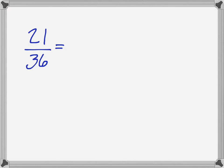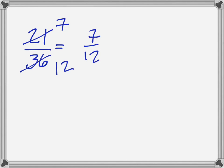Let's use the identity property to simplify fractions. Your book may also call this the fundamental property of rational numbers, but really this is just the identity property of multiplication — it's not a new property. When you simplify a fraction, a lot of times we just cancel things out. I know 21 can be divided by 3 to get 7, and 36 can be divided by 3 to get 12, so this fraction simplified is 7-twelfths. That is true, but we did skip a couple of steps — it's the identity property that justifies why we're allowed to cancel numbers out and reduce the fraction.